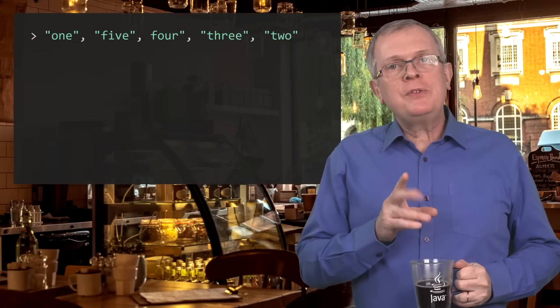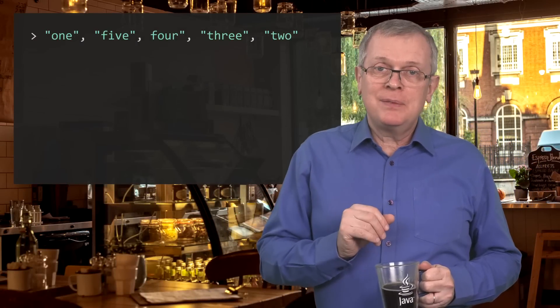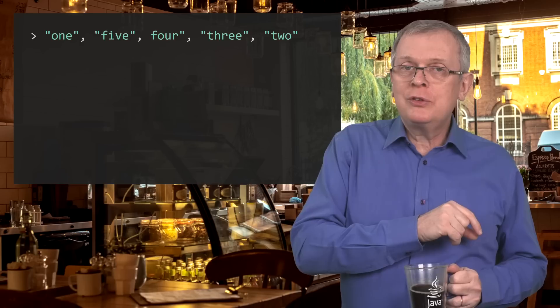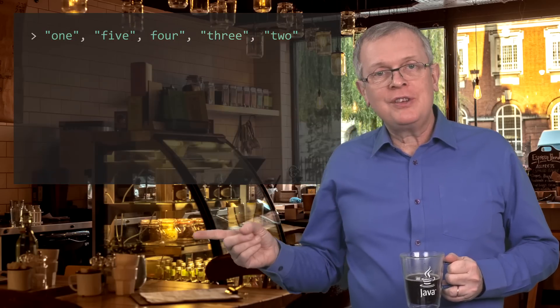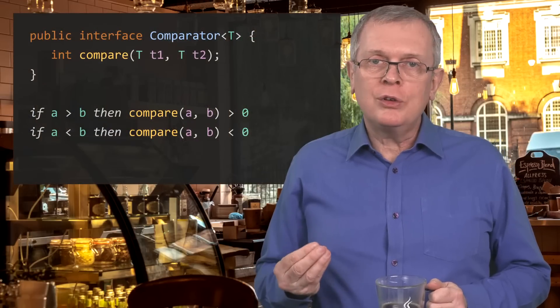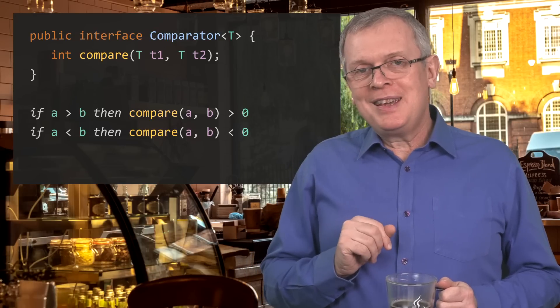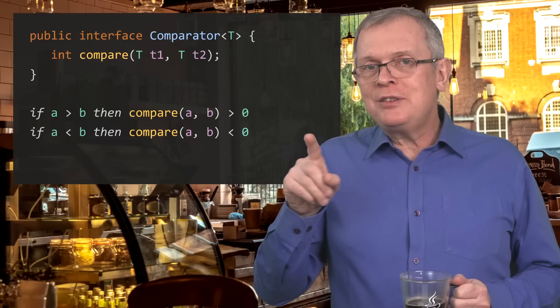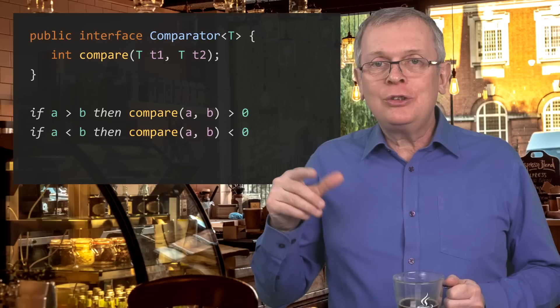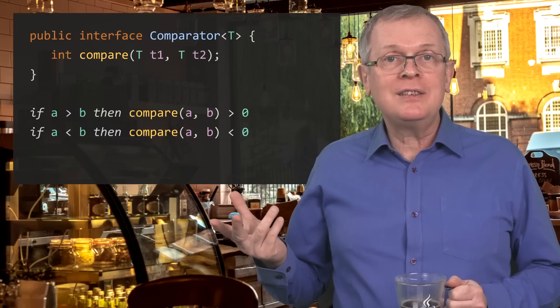But now suppose that you need to compare your strings by their length — the shortest strings first and the longest strings at the end. Then you need to create your own comparator. Implementing this interface is pretty straightforward; you can do that with a lambda. All you need to remember is that this compare method returns an int, and that there is a convention on this int. If a is greater than b, then a.compare(b) should be greater than zero.